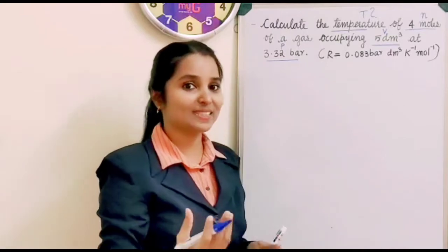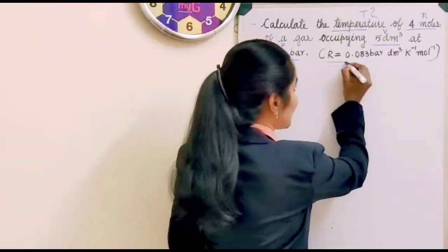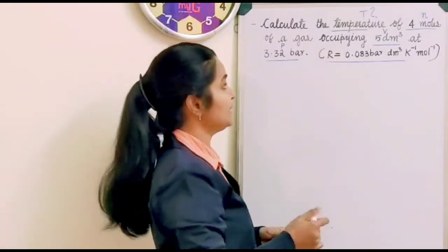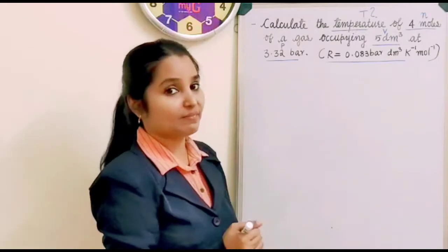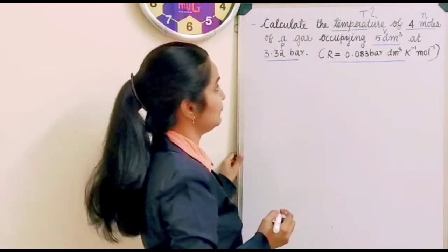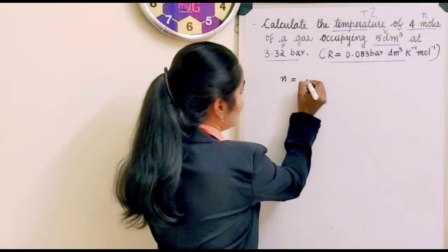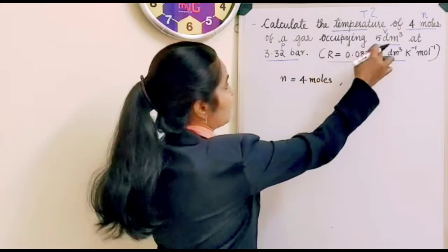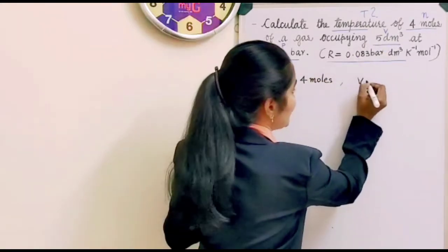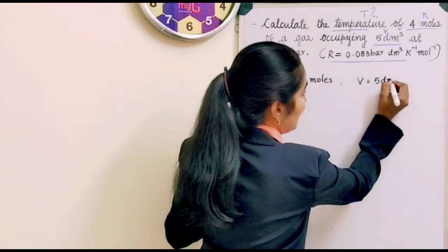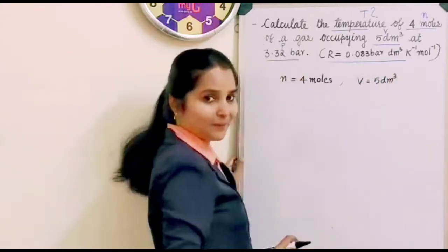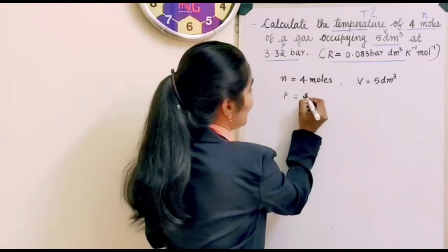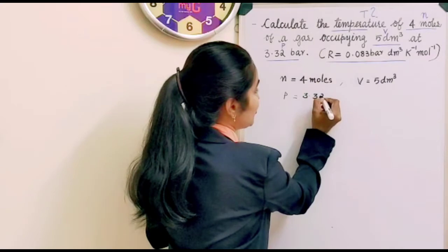And R you know it is gas constant. And the value of gas constant is also given. So let's just take and write all those values that is given in the problem. N is equal to 4 moles. And then what's given? V is given. V is equal to 5 dm³. And then P is given. P is equal to 3.32 bar.